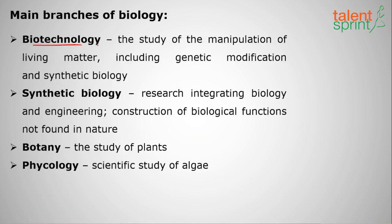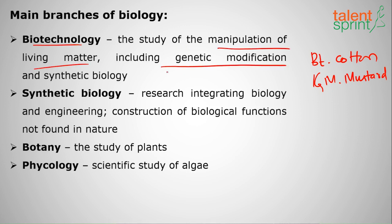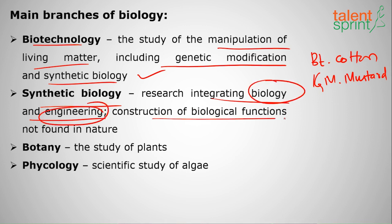Next is biotechnology. We are now seeing BT cotton and GM mustard — these are genetically modified crops. We genetically modify crops to achieve higher production and pest control. Biotechnology is the study of the manipulation of living matter, including genetic modification and synthetic biology. Next is synthetic biology: an artificial or man-made research integrating biology and engineering — it is the construction of biological functions not found in nature.